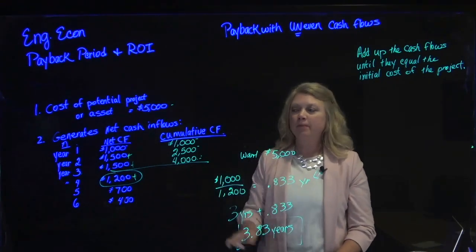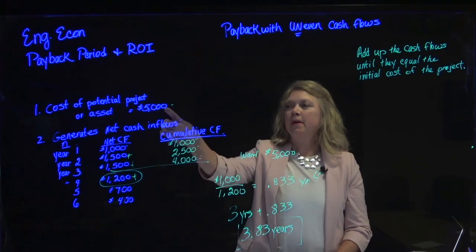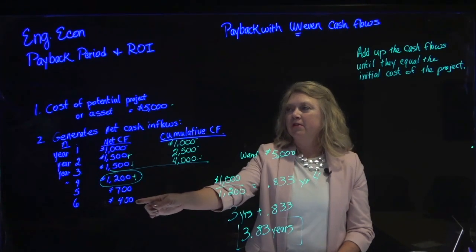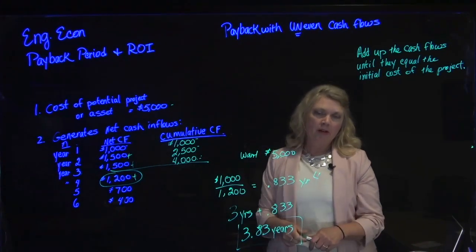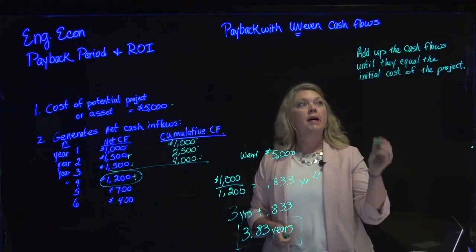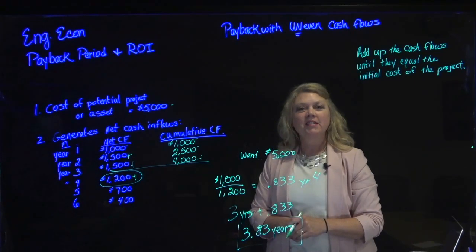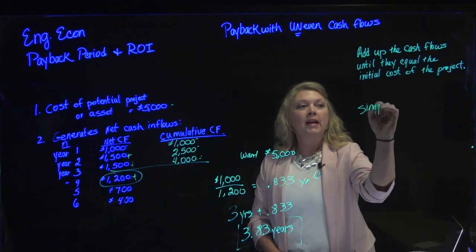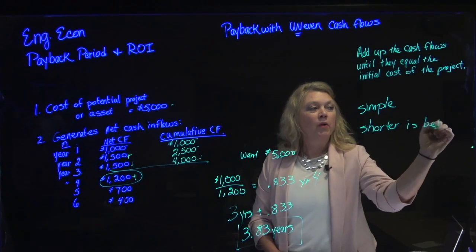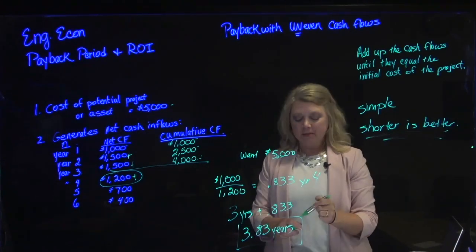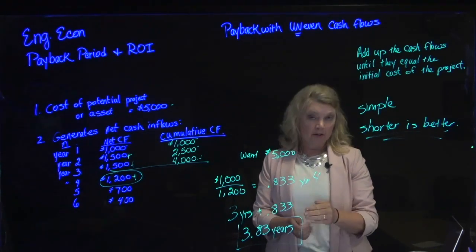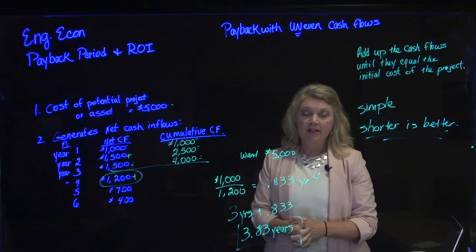You can figure that out for each year as well. $700 in year five divided by the initial cost of $5,000 — that would be return on investment for year five. And $400 in year six divided by the initial investment — that would be the return on investment in year six. Then the project is done; it's a six-year life. To recap: simply add up the cash flows until they equal the initial cost of the project. It's simple. A shorter payback is better — companies are now often requiring two years or less, sometimes even one year or less payback period before they will invest in a large project.